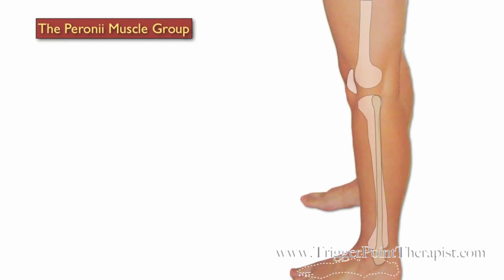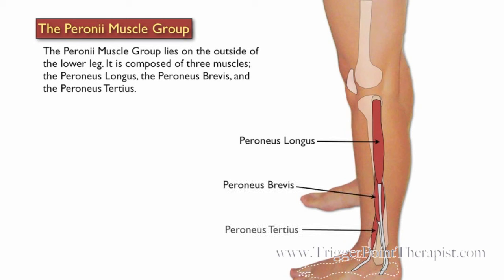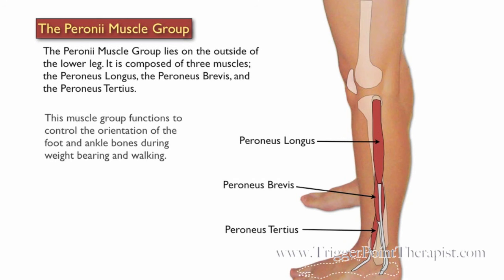The Peronei Muscle Group lies on the outside of the lower leg. It is composed of three muscles: the Peroneus Longus, the Peroneus Brevis, and the Peroneus Tertius. This muscle group functions to control the orientation of the foot and ankle bones during weight bearing and walking.